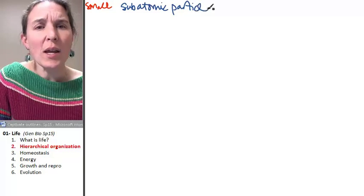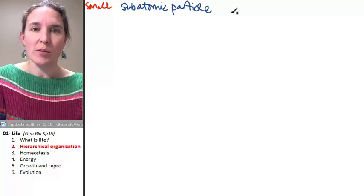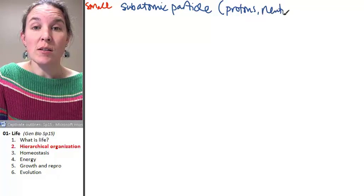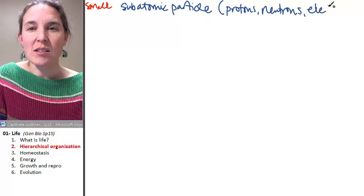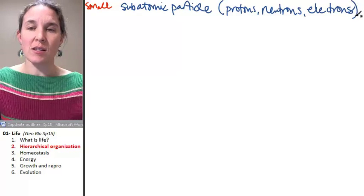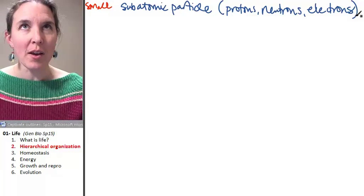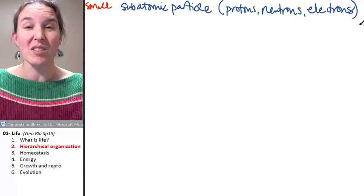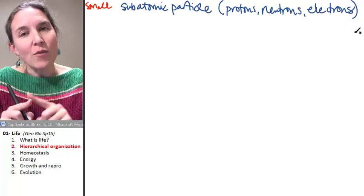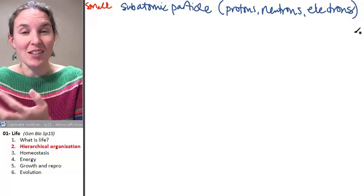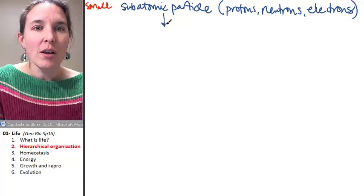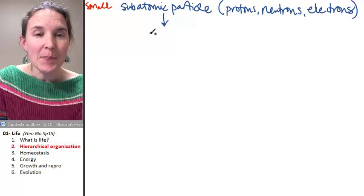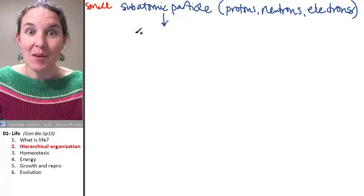What is an example of a subatomic particle? We've got protons, neutrons, and electrons. If you've never heard of this, we've got an entire lecture coming up day after the next one on chemistry, where we'll be talking about these different subatomic particles and what they do and why they're significant. If we take subatomic particles like protons, neutrons, and electrons and put them together, we're going to make atoms.